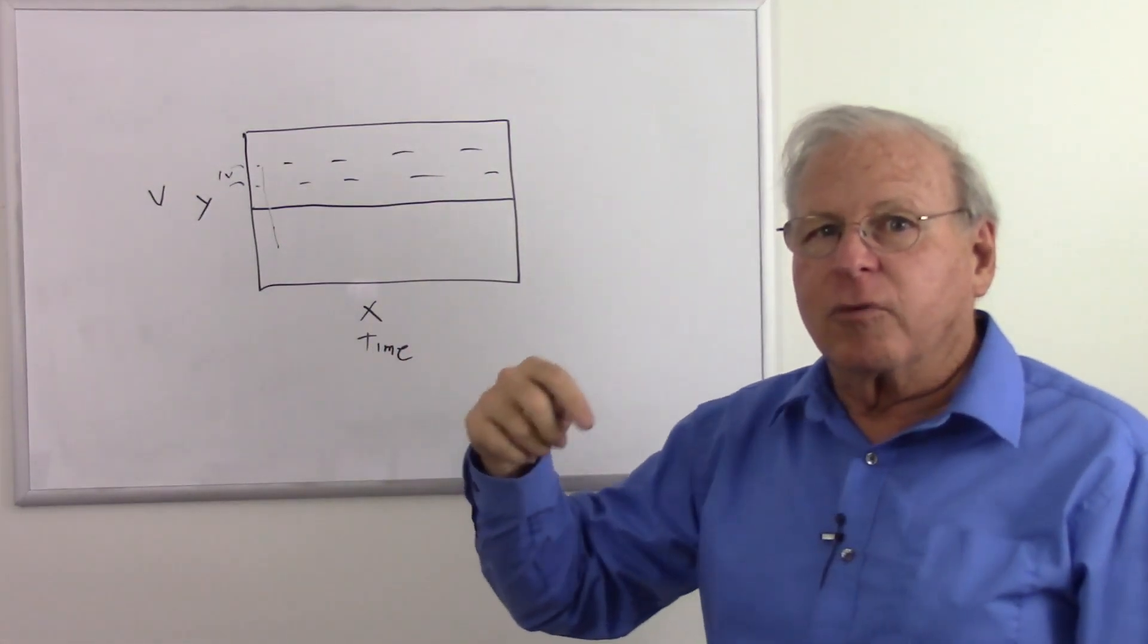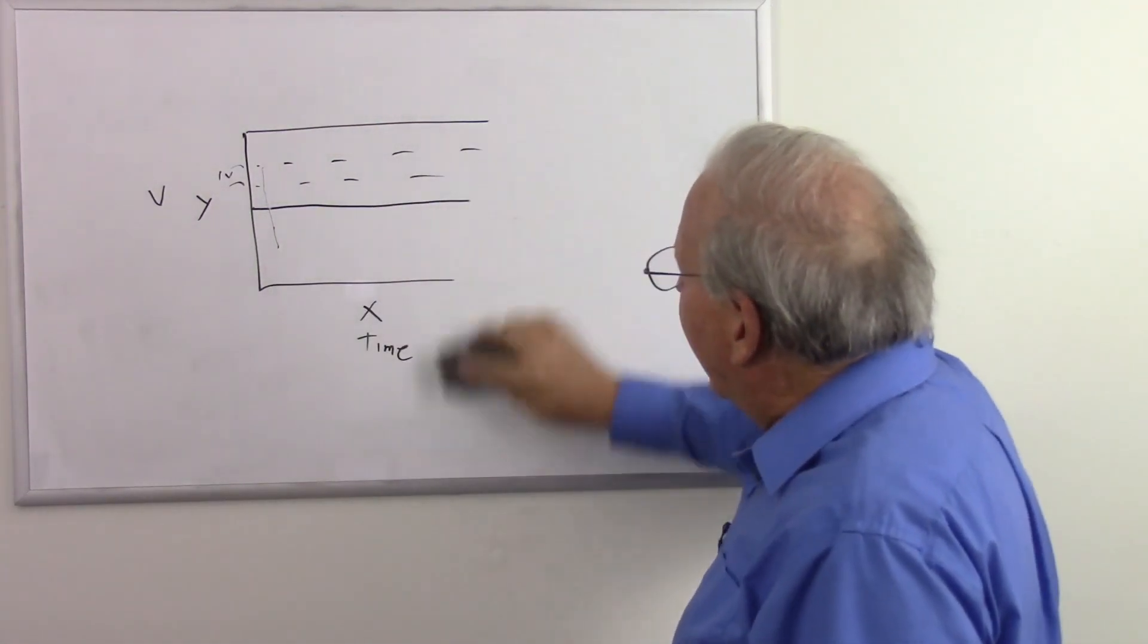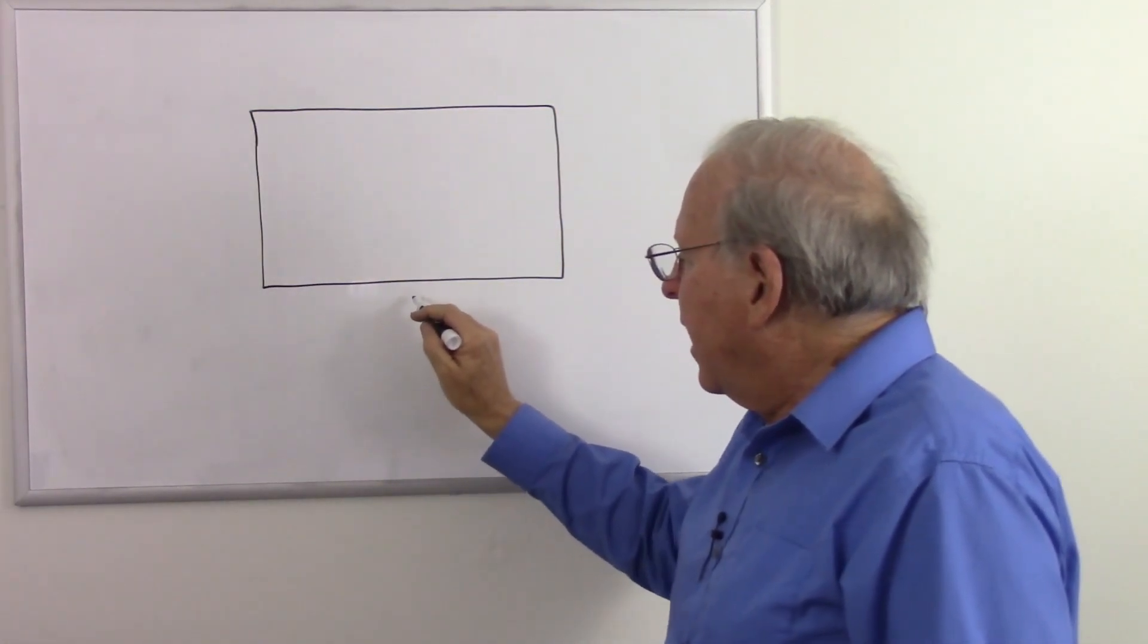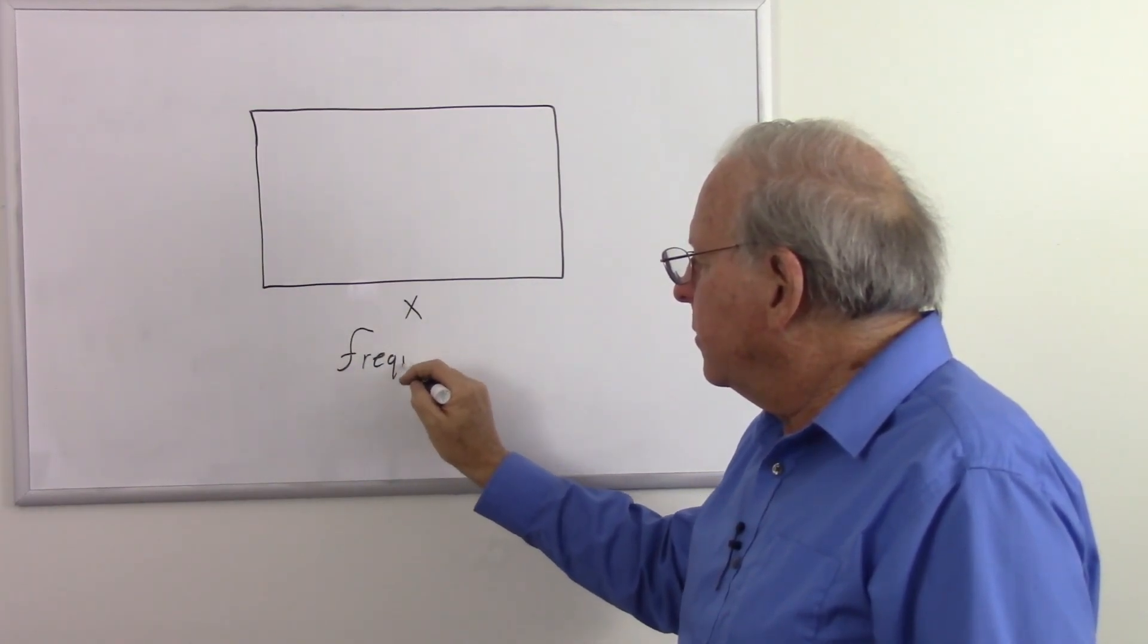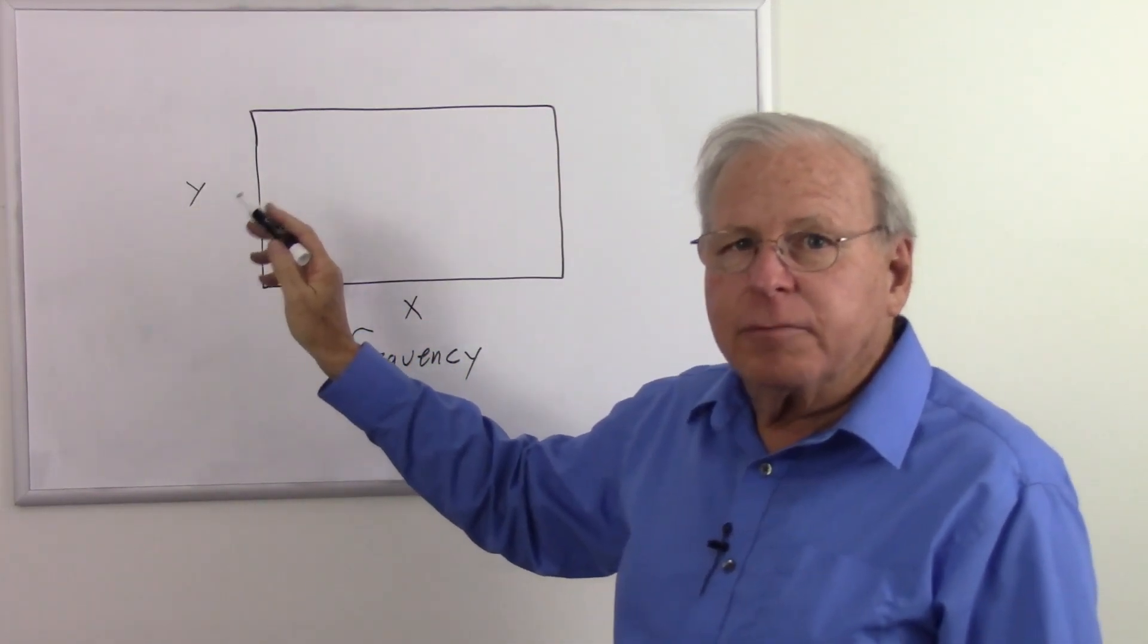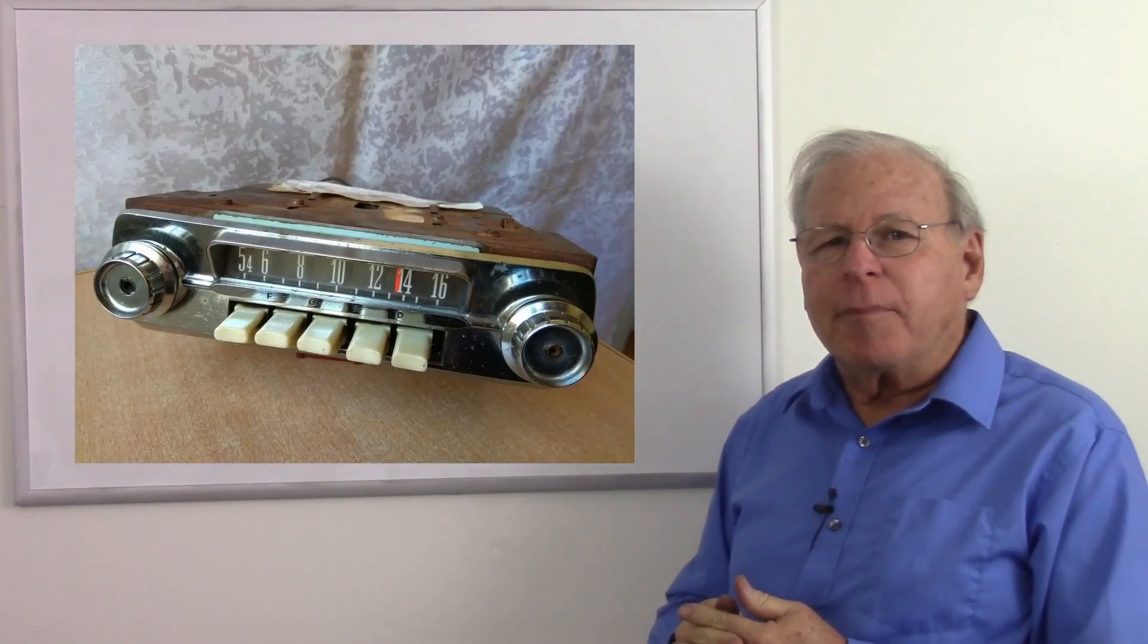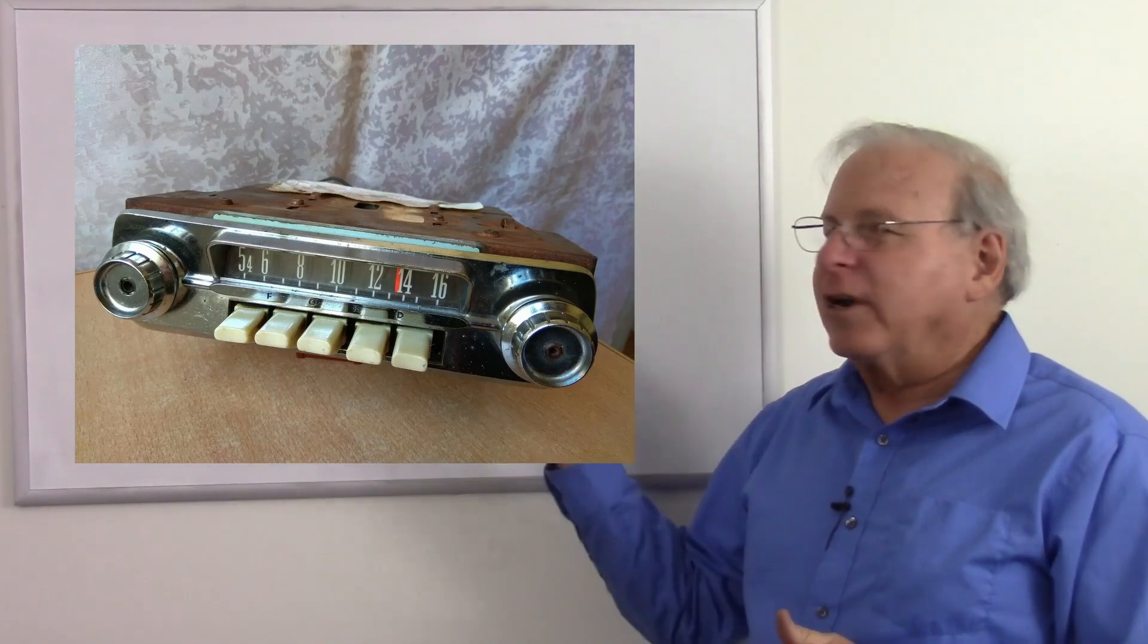And if you want to understand that better, be sure to watch my video series on oscilloscopes linked below. The frequency domain, we have the x-axis. Let me draw this again. We have something that we're displaying, whether it's a graph or an actual device, where the x-axis is frequency. And the y-axis is voltage, most likely. But there is a device that not too many people see anymore. But here it is. This is a manually operated volume indicating frequency domain analyzer. And of course what it is, it's an old time radio.